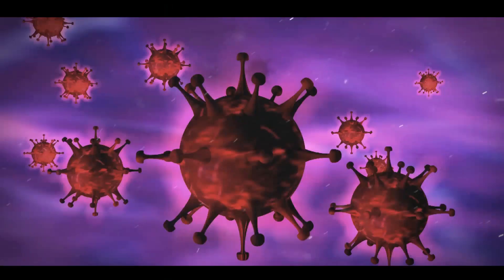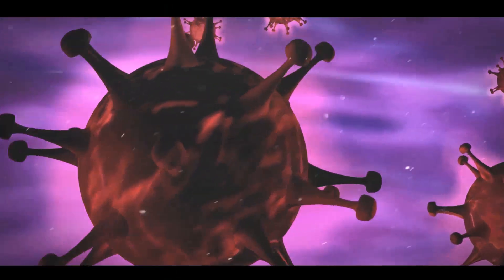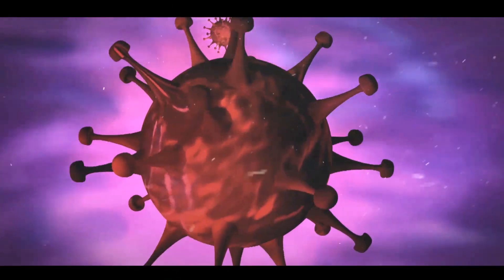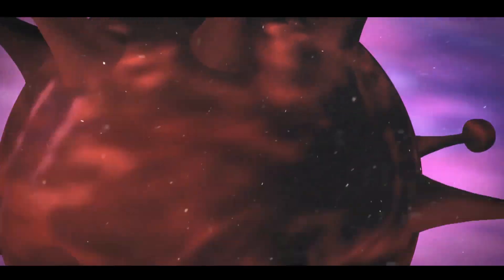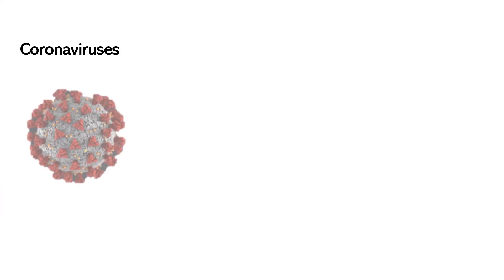We have known coronaviruses for a long time before this pandemic. They are a group of viruses covered in little protein spikes that look like a crown. There are hundreds of known coronaviruses, but only some of them infect humans and cause diseases.